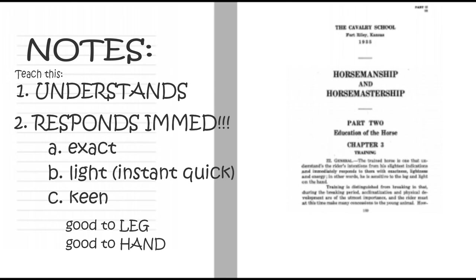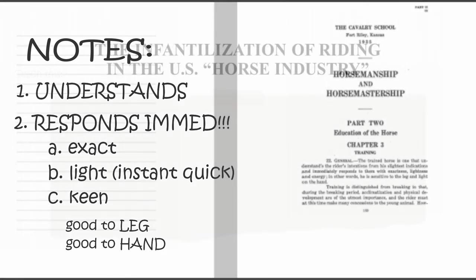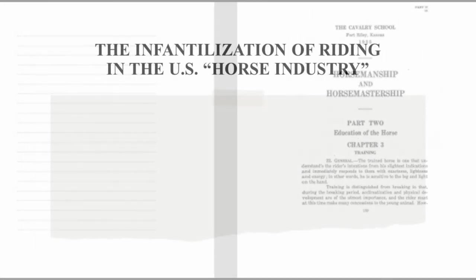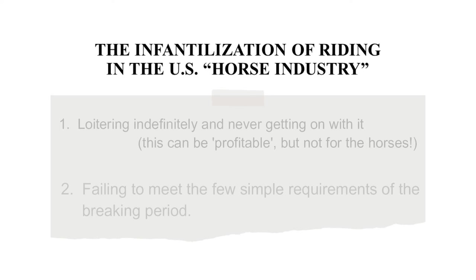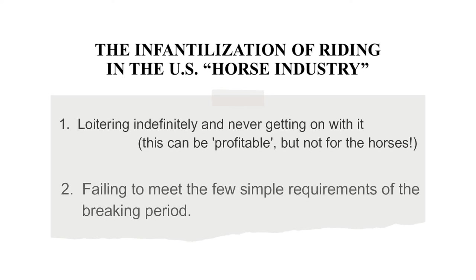Now, even though I am poo-pooing the breaking period and rebuking those who have caused hundreds of thousands of horses and their riders to loiter in it indefinitely, it is still a crucial period. Please don't do that. The other problem that has infantilized the population is that the requirements spelled out for the breaking period have not been fully met. So there's a two-fold problem: loitering indefinitely in the breaking period, and also not fulfilling its requirements. But we're going to save that all for lecture three.